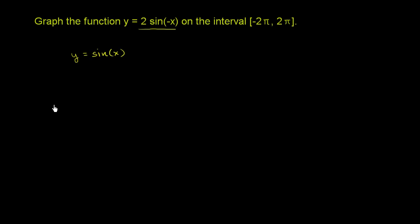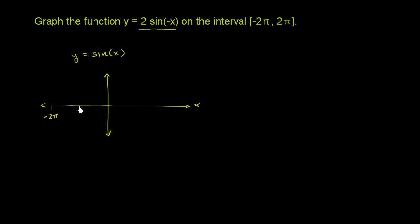So let's do y equals sine of x first. Let me draw our x-axis and y-axis. We care about the interval between negative 2 pi and 2 pi. So this is negative 2 pi, then negative pi, then 0, positive pi, and 2 pi. And on the y-axis, this could be 1, 2, negative 1, and negative 2.